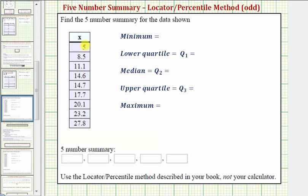Notice how the data values are in order from least to greatest, which we do need. Once we have them in order, we can easily identify the minimum and maximum values. Notice the minimum is 5, and the maximum is 27.8.